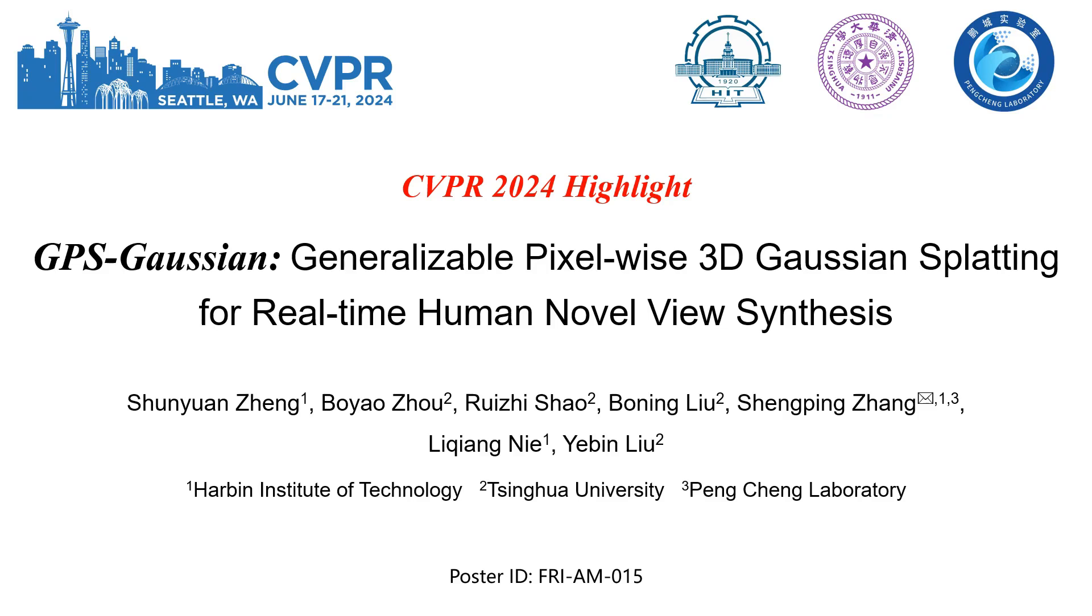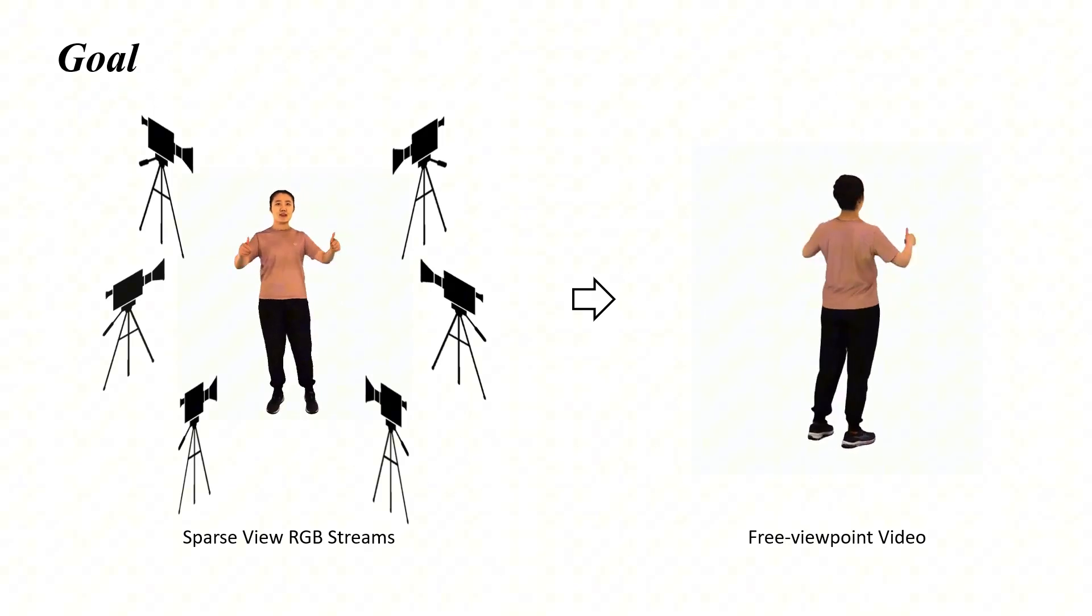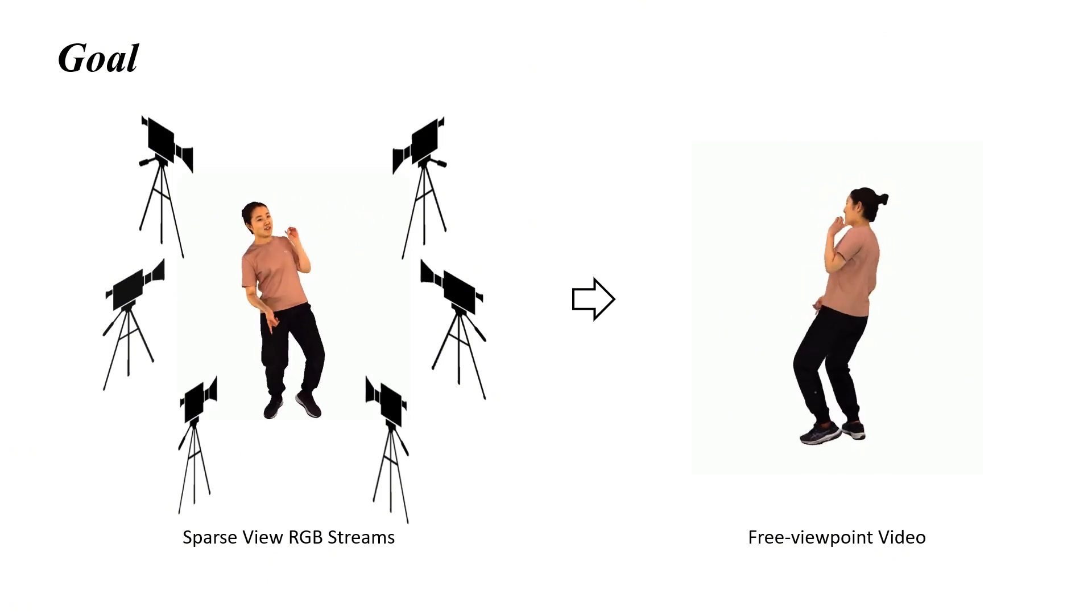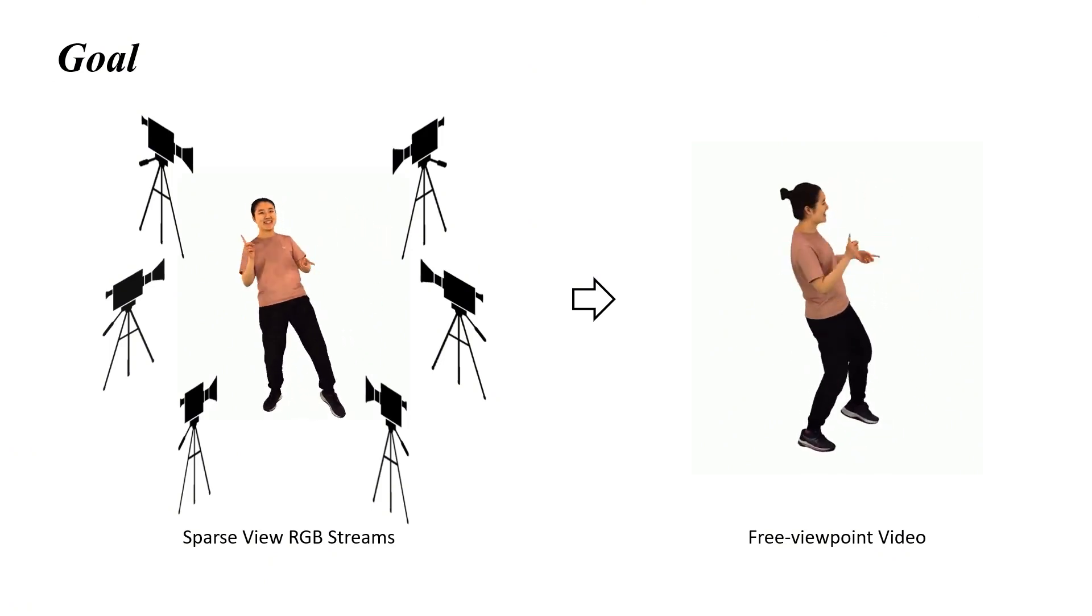Welcome to our talk on CVPR 2024 Highlight Paper GPS Gaussian. In this paper, we delve into a generalizable pixel-wise 3D Gaussian splatting method for real-time human novel view synthesis, which directly regresses Gaussian parameters in a feed-forward manner instead of per-subject optimization. Given RGB streams of a human-centered scene with sparse camera views, our method aims to generate high-quality free viewpoint videos in real-time.